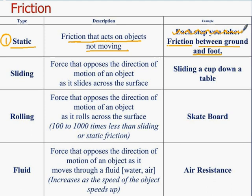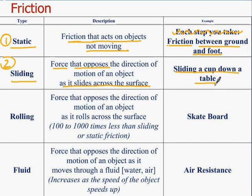The second type of friction is sliding friction. It is a force that opposes motion as an object slides across a surface. If you slide your feet across the floor, or slide a cup down a table, anything sliding across a surface experiences sliding friction.